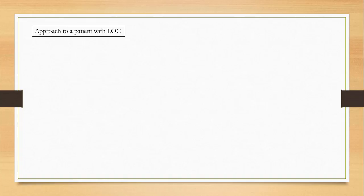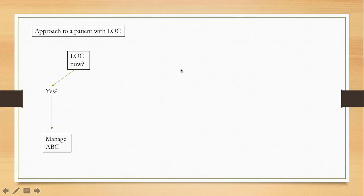Let's see how we approach a patient who comes in with loss of consciousness. There are two scenarios: one is that the patient is unconscious at the time of presentation. In that case this is a red flag situation — you will manage the patient with ABCs, run labs and tests, and then go back and look at the history simultaneously, working it up in reverse order.